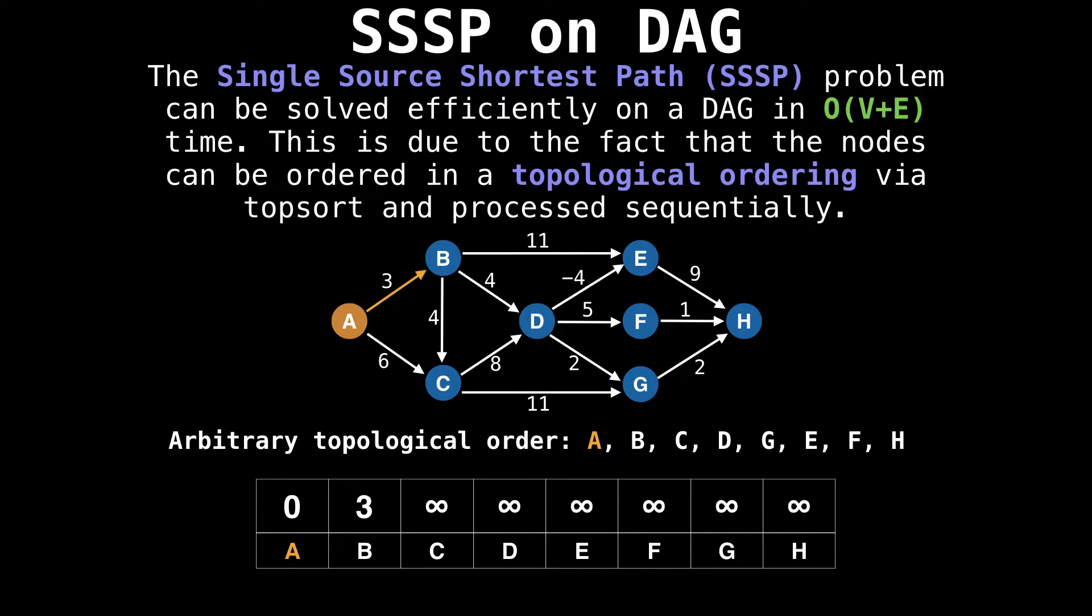From A we want to visit all reachable nodes starting with node B and update the value to B if it is better than what was already there.